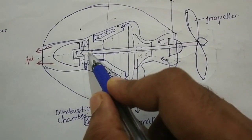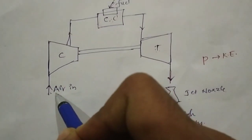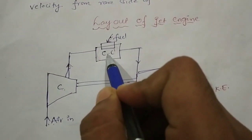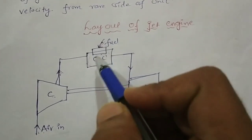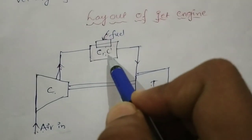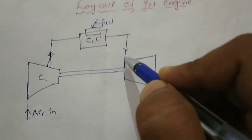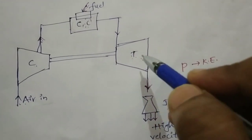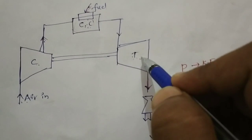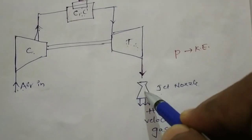This is the open cycle gas turbine. Air from the atmosphere enters the compressor. After the compressor, the compressed air enters the combustion chamber. Fuel supply takes place, and when fuel is mixed with the high-pressurized air, combustion takes place. This high-temperature combustion air is sent into the turbine, where expansion takes place — pressure decreases and volume increases.